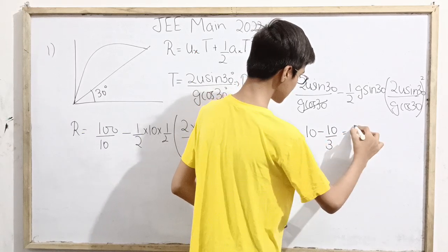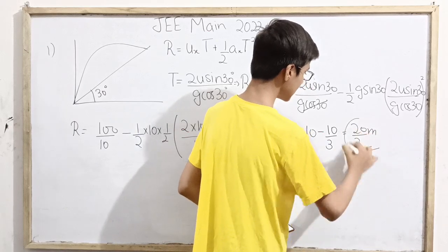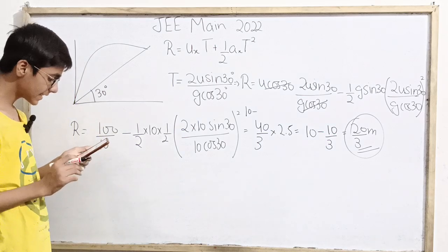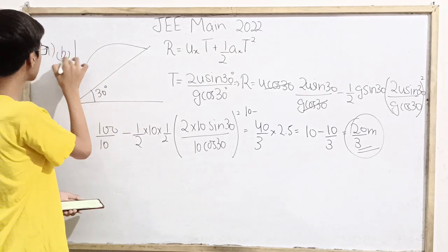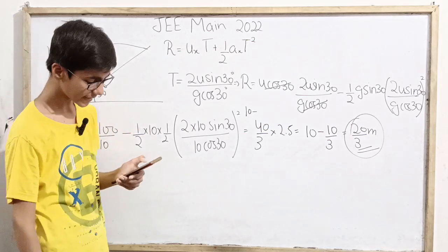This becomes 10 minus 10 over 3, which equals 20 over 3 meters. That is our final answer. Which option is correct? Option B, 20 over 3, is correct. So the first question is solved.